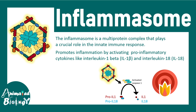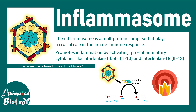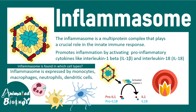Basically, inflammasome processes interleukin-1 beta and interleukin-18. The question is: inflammasome is found in which cell type? Obviously the cell types that secrete these cytokines — and we know these cell types. These are neutrophils, monocytes, macrophages, and dendritic cells.